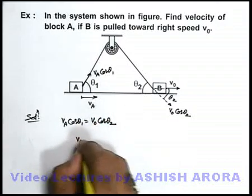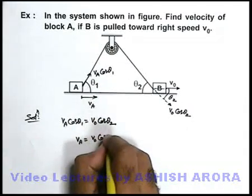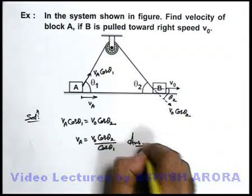So in this situation, directly we have got the value of velocity with which block A is moving: vₐ = v₀ cos θ₂ / cos θ₁. That is the answer of this question.